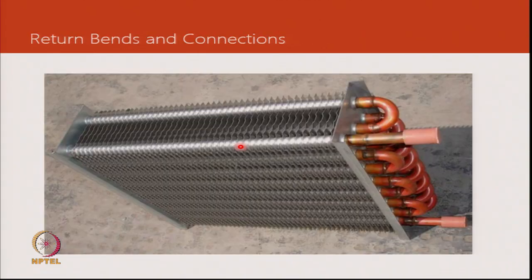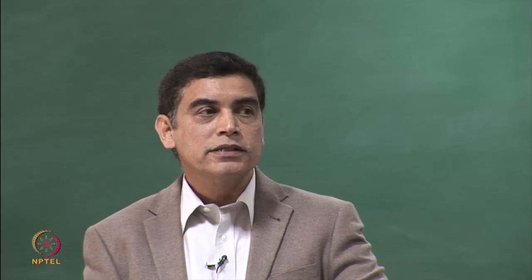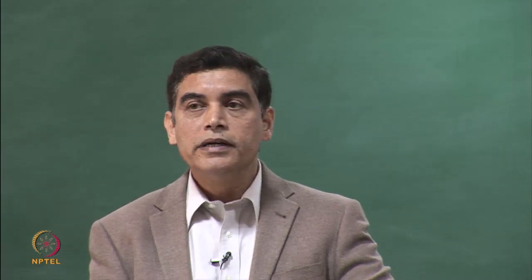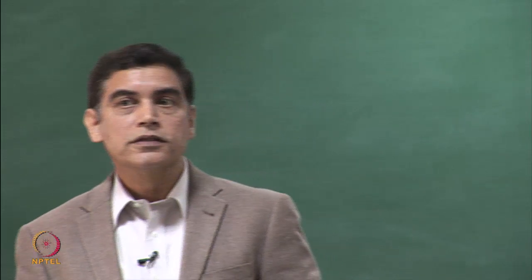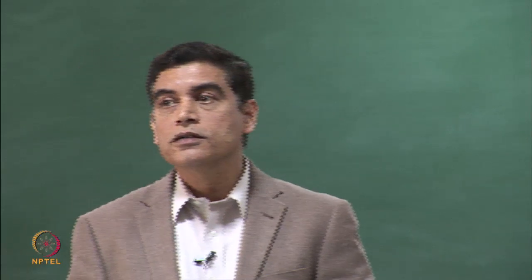After the tube expansion is done, the return bends are brazed. Once the brazing process is completed, the coil is subjected to leak testing, and on a random basis at a certain frequency, burst tests are done to ensure the coil integrity is intact and no leaks or unfamiliar situations will occur during operation.